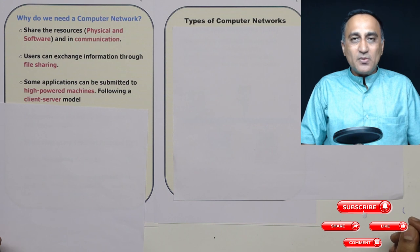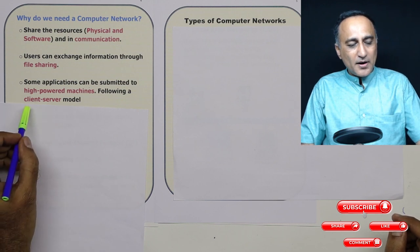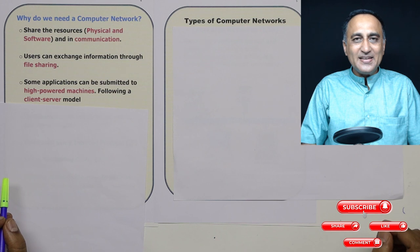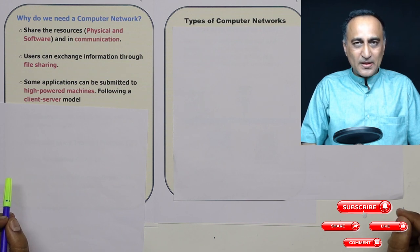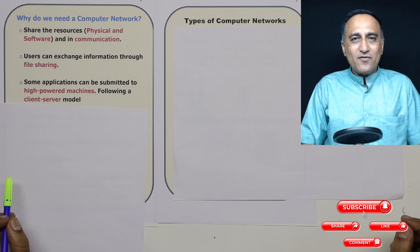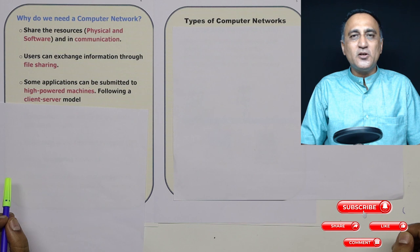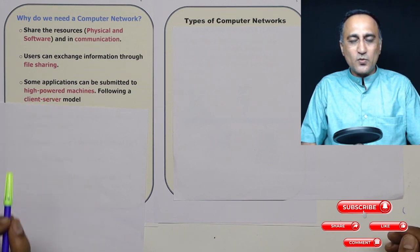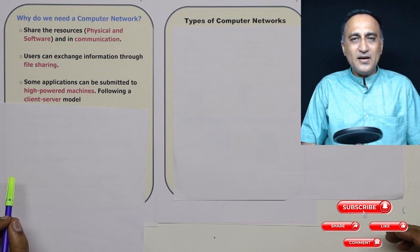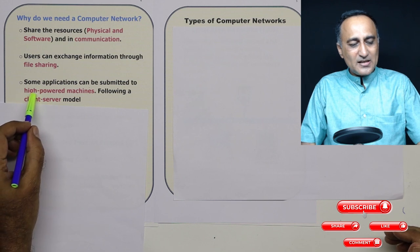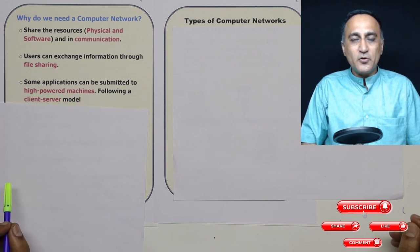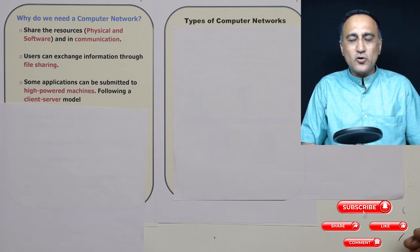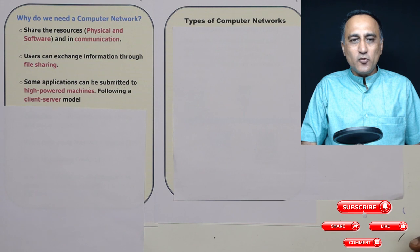Another common application of networks is the client-server model. The server is a high-powered machine, and the client takes services from it. For example, a program that takes three days on my machine might execute in half an hour on a server. I submit my program and data to the server, it executes and sends back the result. Servers can be parallel computers or extremely high-configuration machines, while clients can be simple desktops, laptops, or mobile phones.